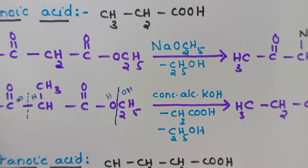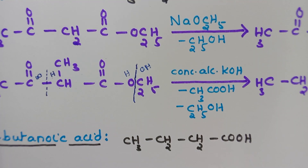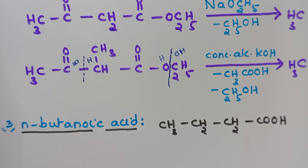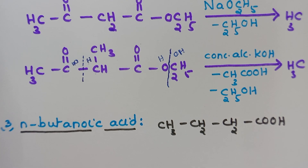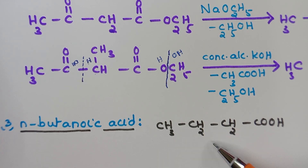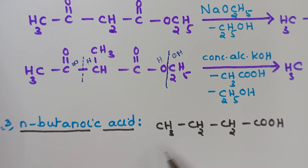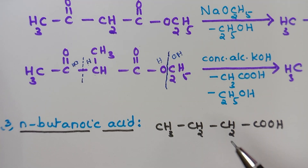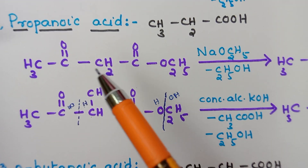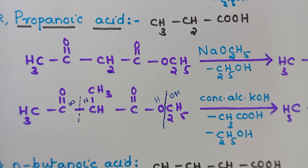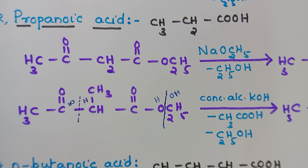The next higher compound is n-butanoic acid, with all four carbons in a straight chain: CH₃CH₂CH₂COOH. Try to prepare it at home on your own, taking propanoic acid as the example. Whether you are able to do it or not, please let me know in the comment section — if you are not able to do it, I will show the preparation of n-butanoic acid.